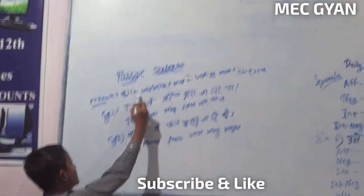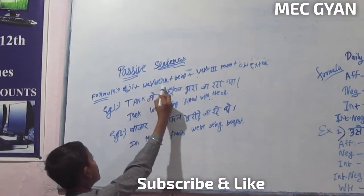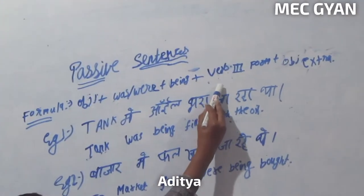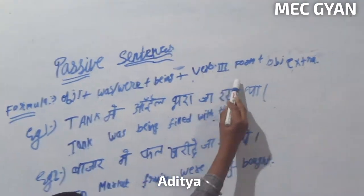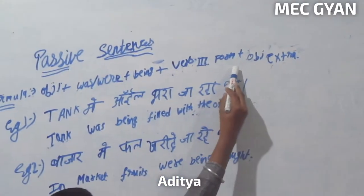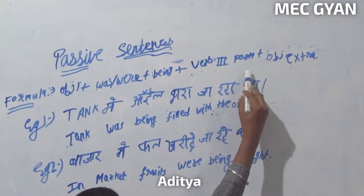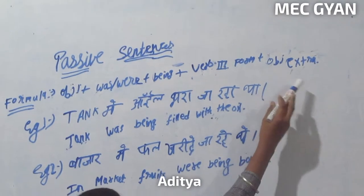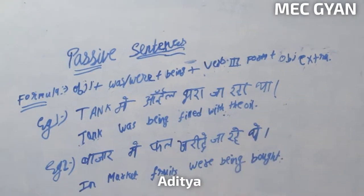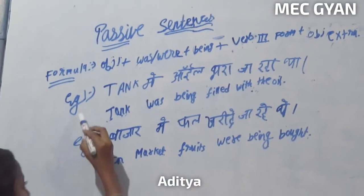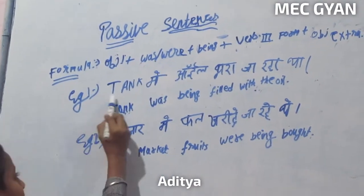Object 1 plus, word 1 plus, unit plus, word 3 plus, word 3 plus, object extra. Example first,